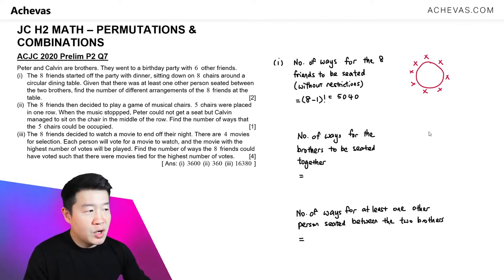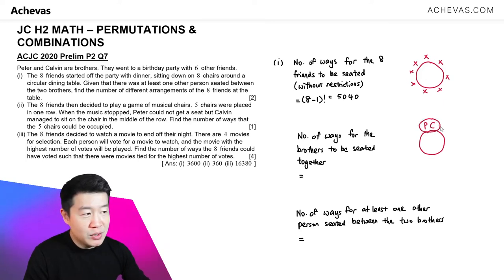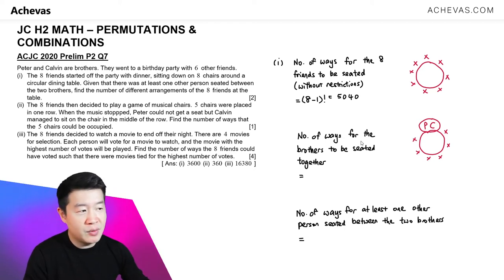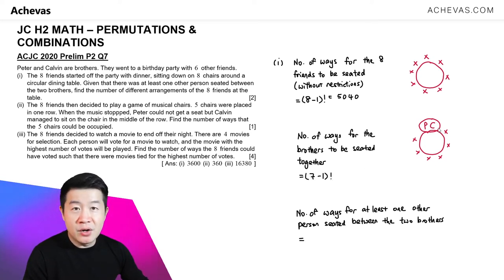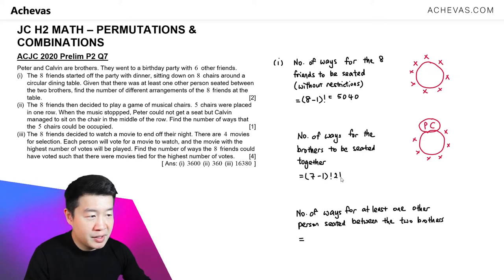Then I'm going to work on when the two brothers, Peter and Calvin, are going to be seated next to each other without any people in between them. Together with the 6 other friends, they will be permutating around this circular dining table. Treating them as one object, we have 7 objects total, so (7-1)! And then for Peter and Calvin, they can be swapping their positions, so multiply by another 2!. This gives us 1,440.